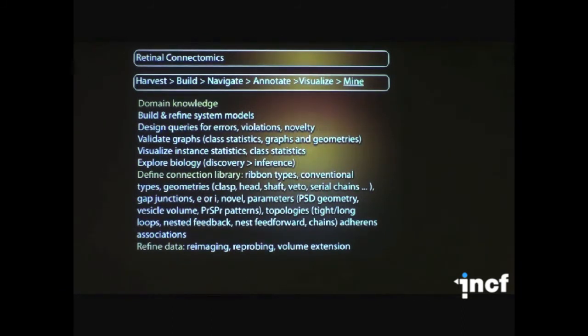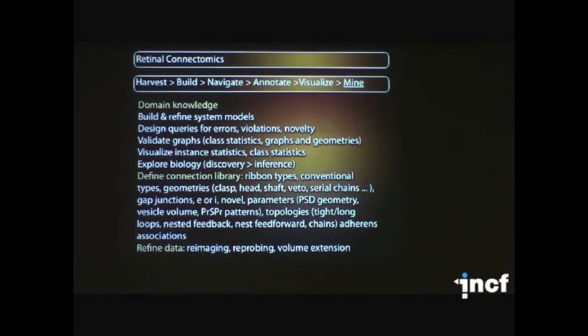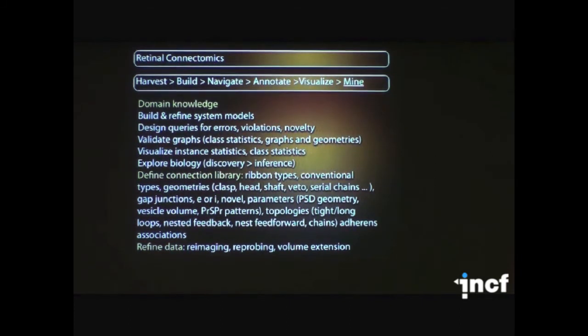We can validate our graphs in a variety of ways. We're interested in class statistics. So one of the things I won't be able to talk about in detail here, but I think it's important to mention, is that I came from this from the perspective that neurons were going to be sort of average ensembles of their class, and that they were going to kind of make the same numbers of connections with the cells that they were supposed to be talking to.